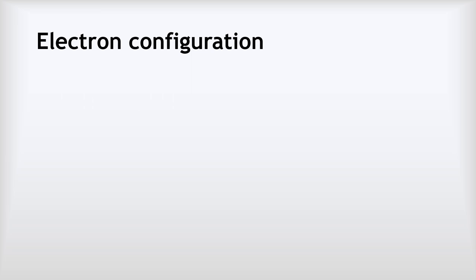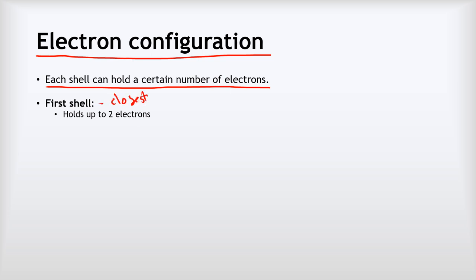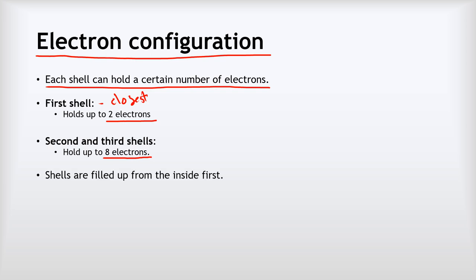The arrangement of electrons in those shells is called the electron configuration. To work out the electron configuration, we need to understand one key fact: each shell can hold a certain number of electrons. The first shell — closest to the nucleus — can hold a maximum of two electrons. Once it's full, we move on. The second and third shells can both hold up to eight electrons. We fill up shells from the inside out.